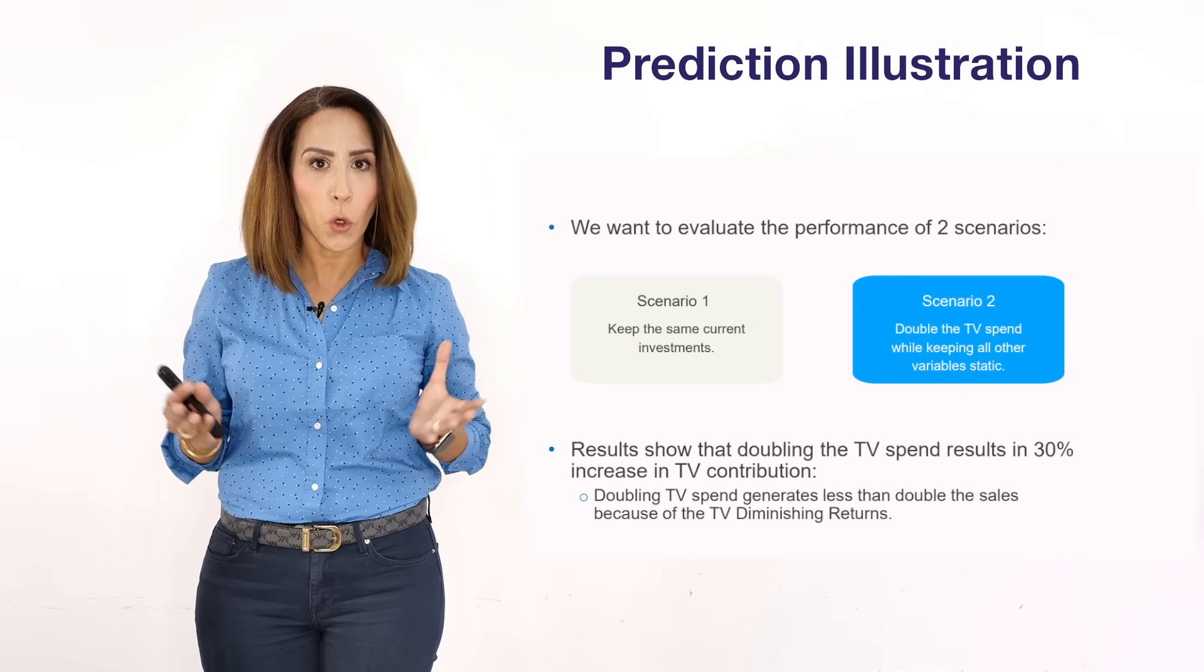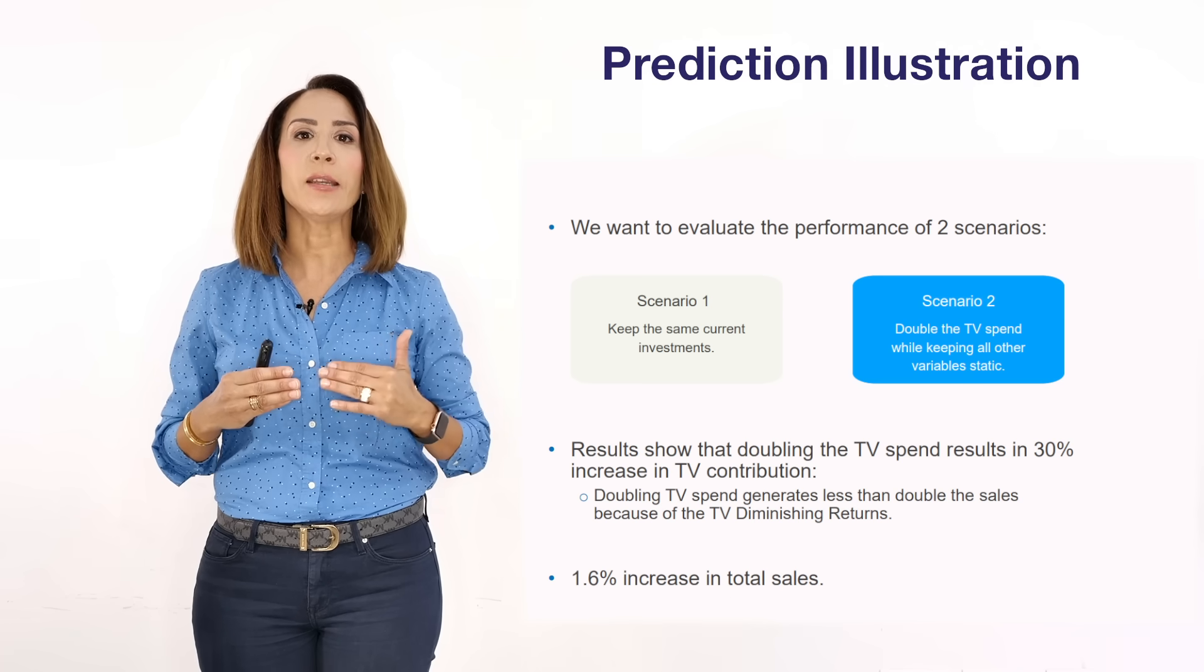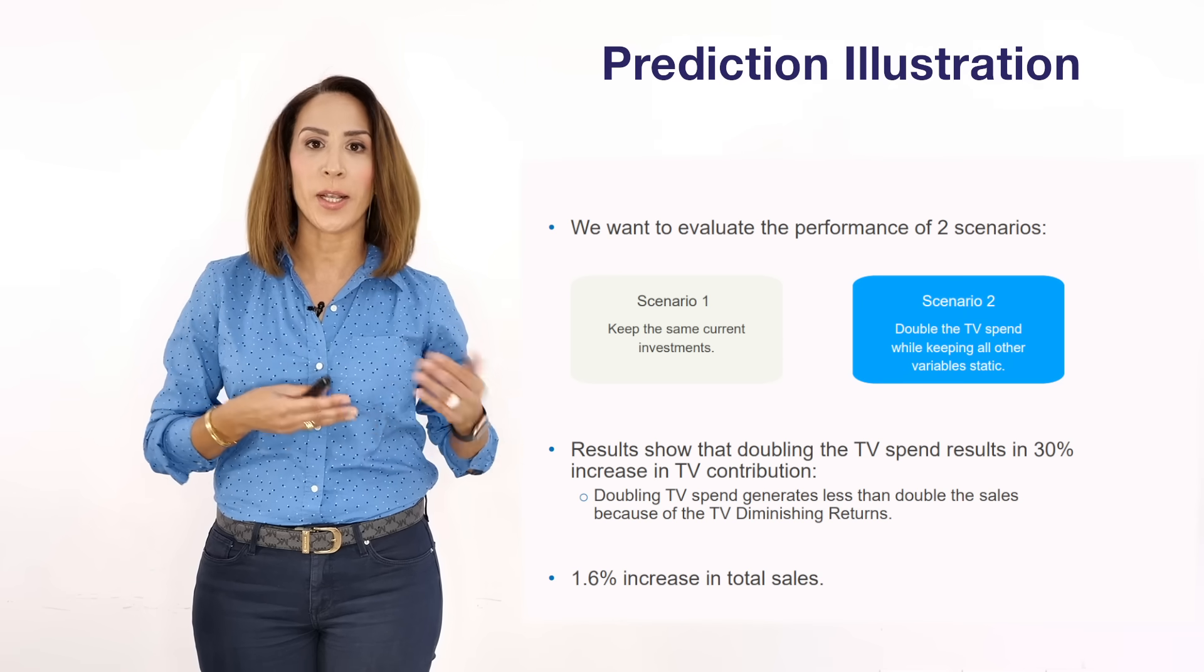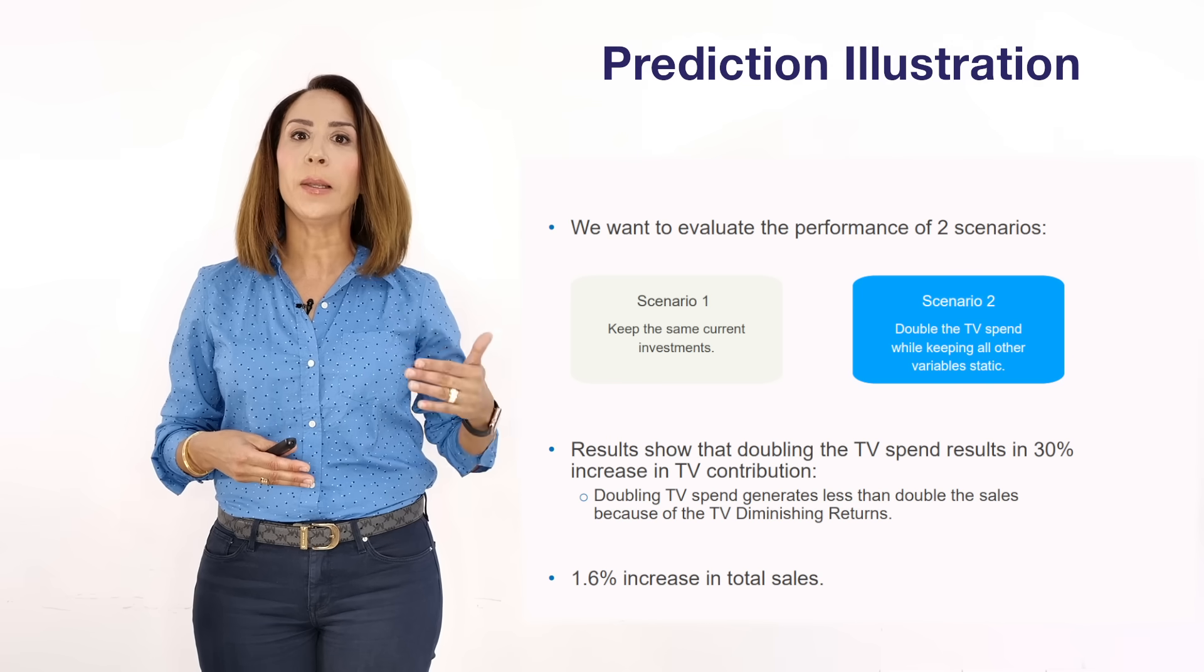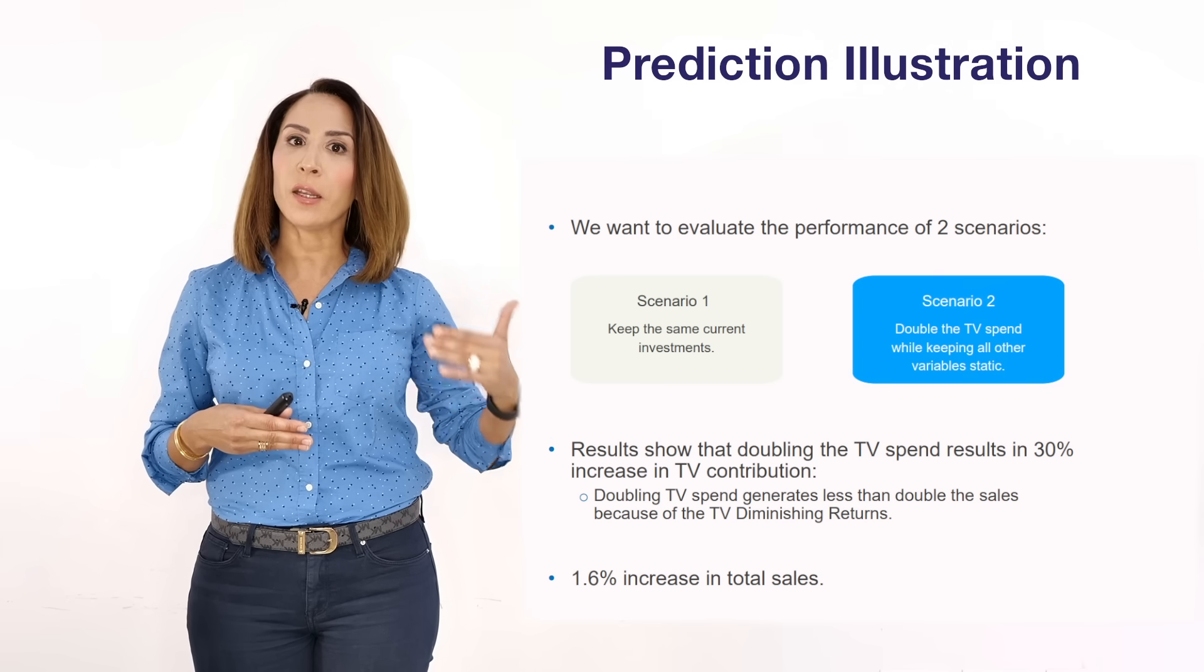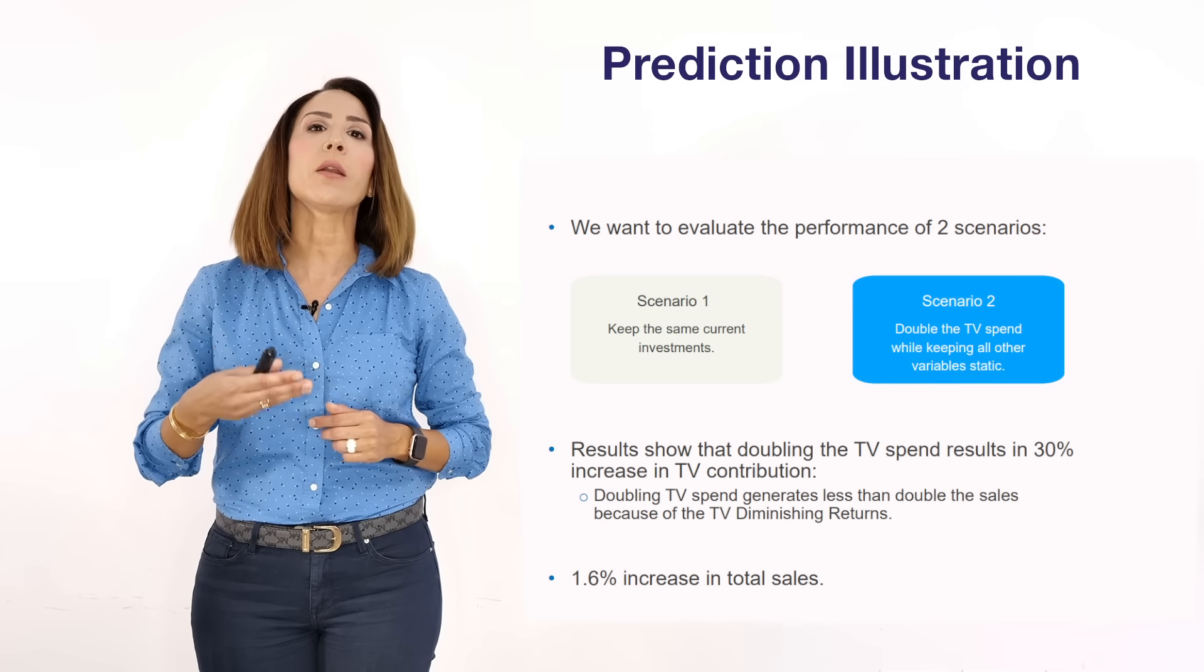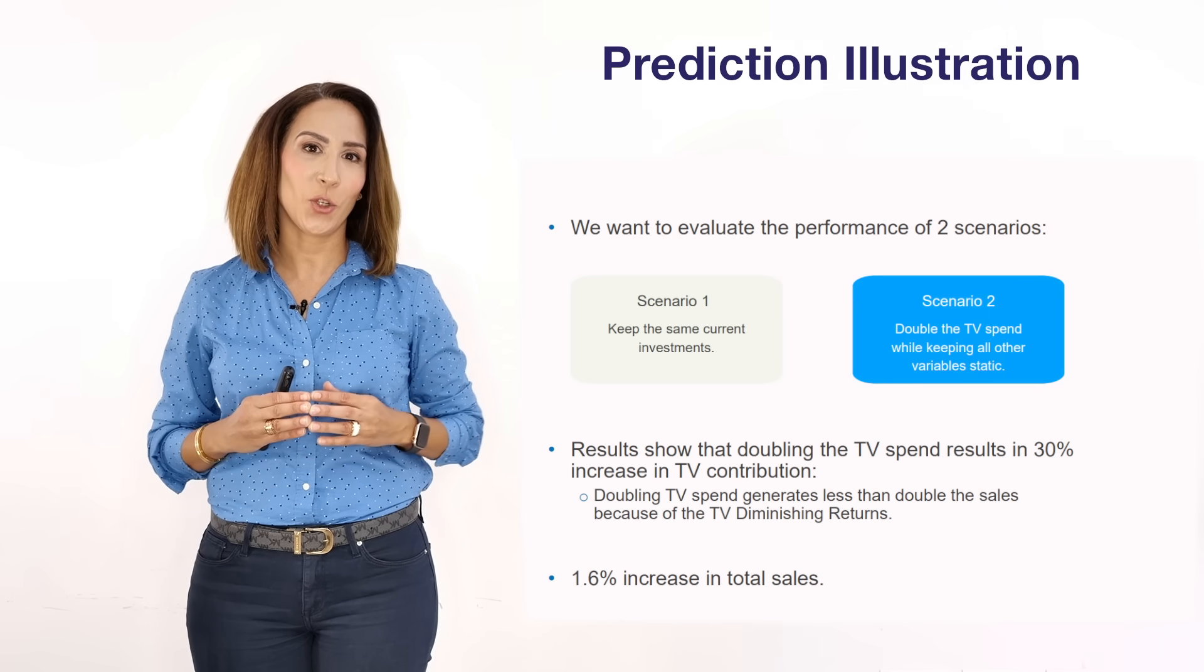Now if we look at overall sales, doubling TV spend resulted in increasing total sales by 1.6 percent. So what you can now do, you can go to your manager and say if we implement double the budget of television compared to the current one, we will be capable of increasing our revenue by 1.6 percent and the contribution that comes from television will increase by 30 percent. This is how prediction works.